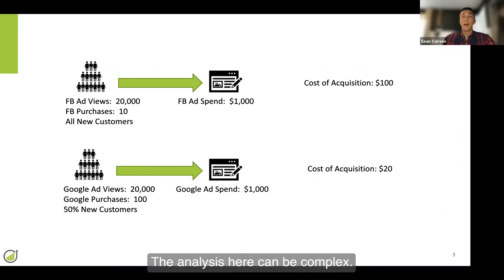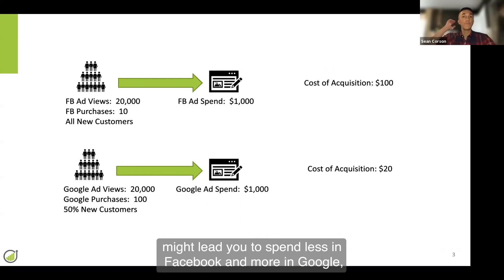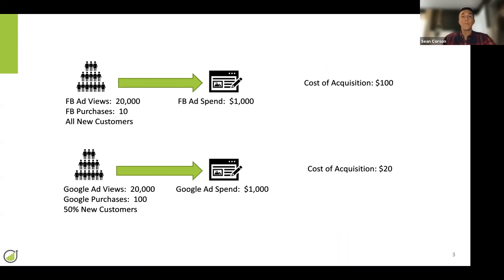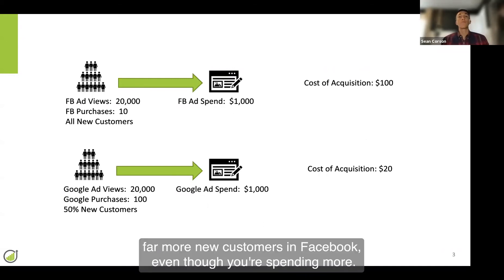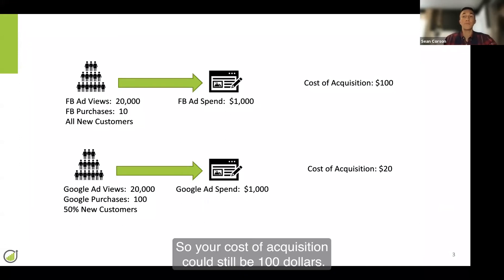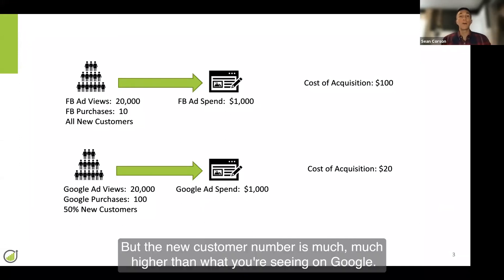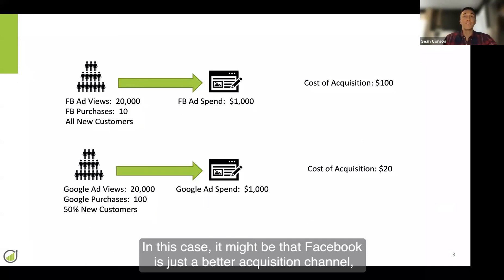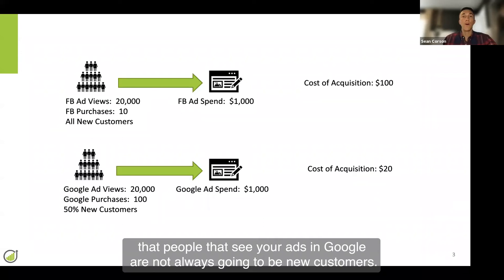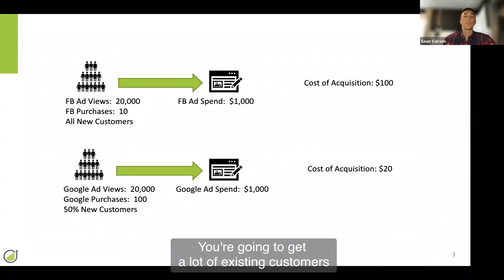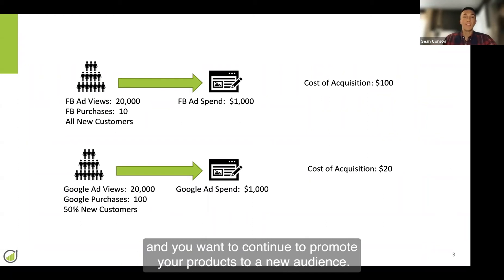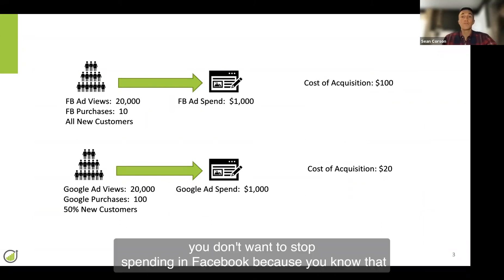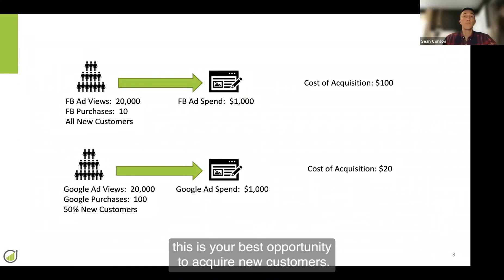The math is very simple, but the analysis here can be complex. For example, while this might lead you to spend less in Facebook and more in Google, perhaps you're actually acquiring far more new customers in Facebook, even though you're spending more. So your cost of acquisition could still be $100, but the new customer number is much higher than what you're seeing in Google. In this case, it might be that Facebook is just a better acquisition channel — people that see your ads in Google are not always going to be new customers; you're going to get a lot of existing customers. And you want to continue to promote your products to a new audience, so even with the higher cost of acquisition, you don't want to stop spending in Facebook because you know that this is your best opportunity to acquire new customers.